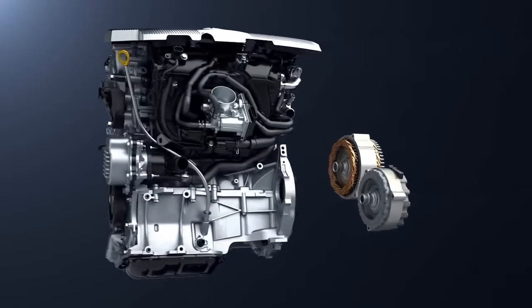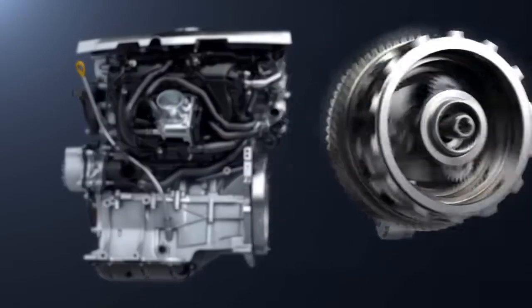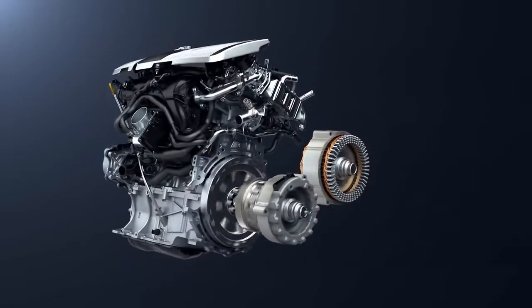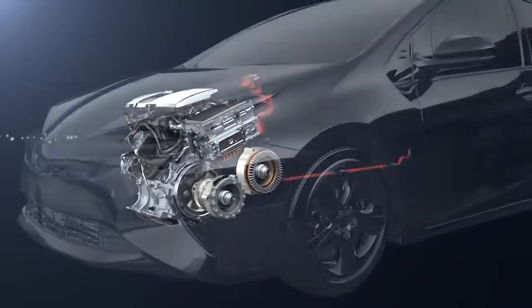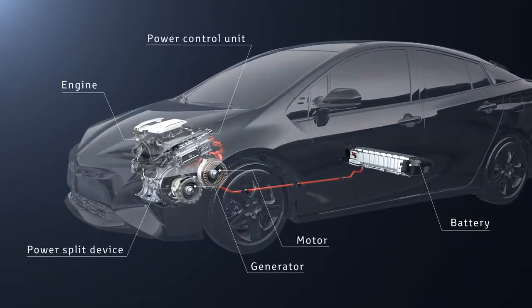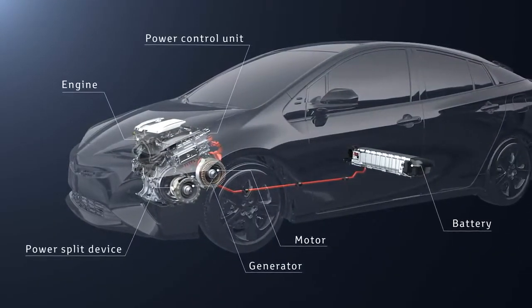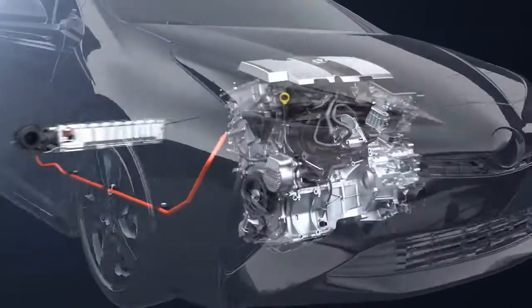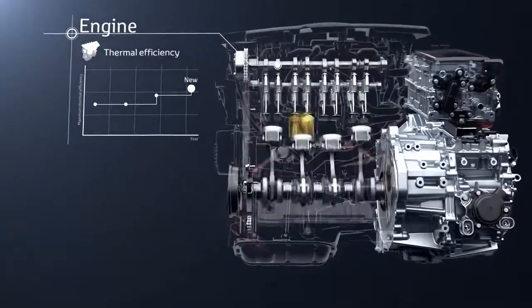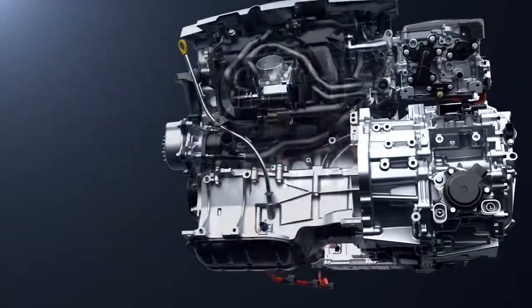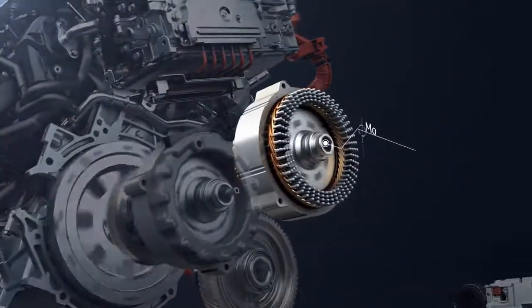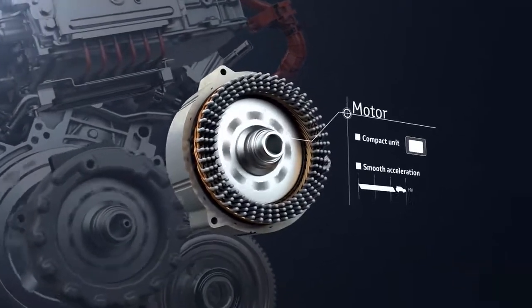The engine and motor combine with the power split device to achieve high energy efficiency. This is the Toyota hybrid system, where each unit has been developed specifically for the hybrid system. The engine has maximum thermal efficiency with low fuel consumption and emissions, while the motor is compact and highly efficient.